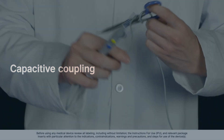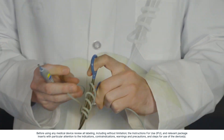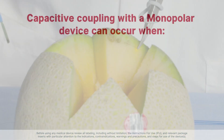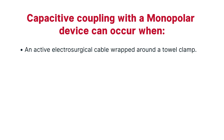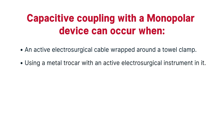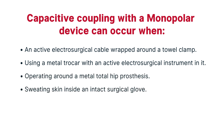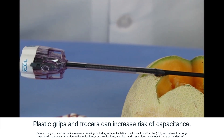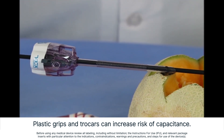Capacitive coupling. When an insulator separates two conductors, the insulator serves as a capacitor and creates an electrostatic field. Thus, a current in one conductor can induce a current in the other. Capacitive coupling with a monopolar device can occur under any one of the following circumstances: an active electrosurgical cable wrapped around a towel clamp; using a metal trocar with an active electrosurgical instrument in it; operating around a metal total hip prosthesis; sweating skin inside an intact surgical glove; a metal cannula around an active electrosurgical instrument. The smaller the cannula, the greater the risk for capacitance. The risk increases when a metal cannula has a plastic grip around it.